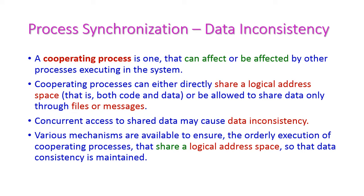In process synchronization, first let us see what is data inconsistency. Process synchronization means more number of processes will be executed on the CPU in an ordered fashion — P1, P2, up to Pn. More number of processes will be executed on the CPU and these processes will communicate with each other by means of message passing or shared memory. These things we have already seen in our previous classes.